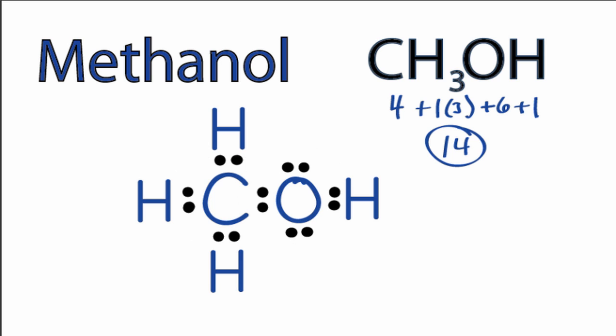We've used all 14 valence electrons for the methanol Lewis structure. The octets are complete, so this is the Lewis structure for methanol.